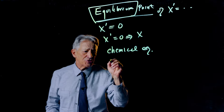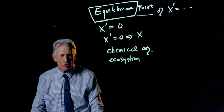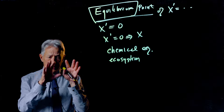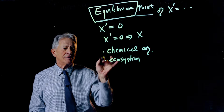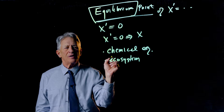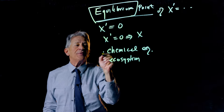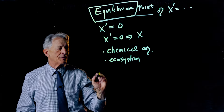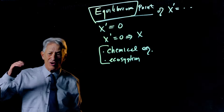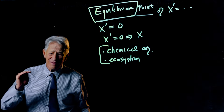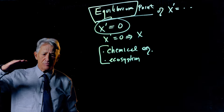You can talk about an ecosystem being in equilibrium, or a thermodynamic reaction being in equilibrium. In each case, that scientific concept of equilibrium corresponds to the mathematical concept of an equilibrium point in the differential equation describing the chemical system or the ecosystem. Equilibrium points of differential equations are equilibrium states of the system — meaning nothing is changing. X' equals zero; the system is in stasis.